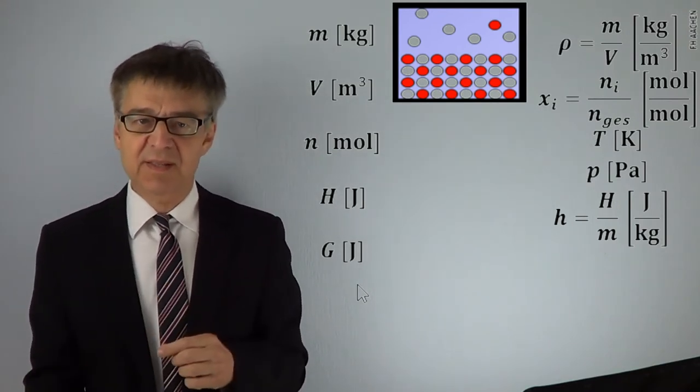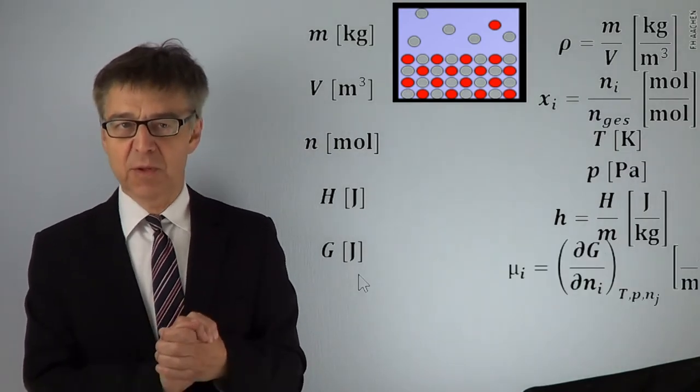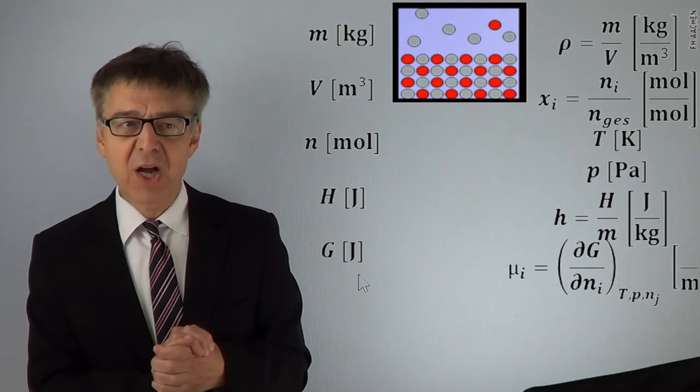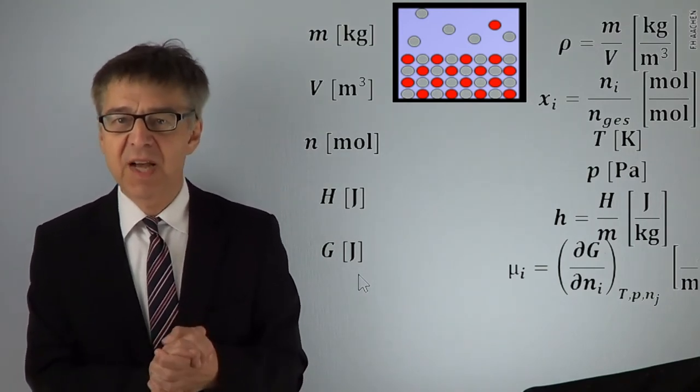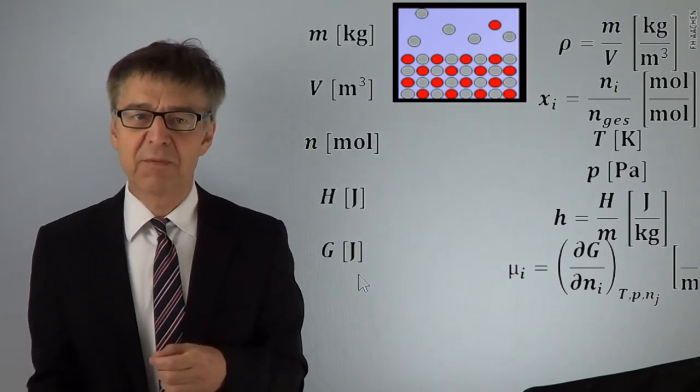G is an extensive quantity. The corresponding intensive quantity, the partial molar Gibbs energy, even has its own name. It's called the chemical potential abbreviated mu.